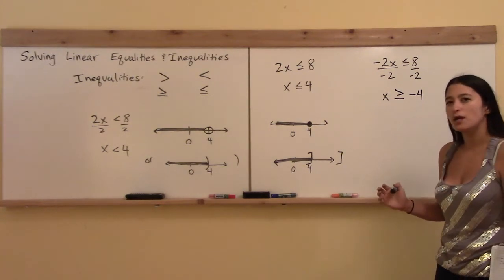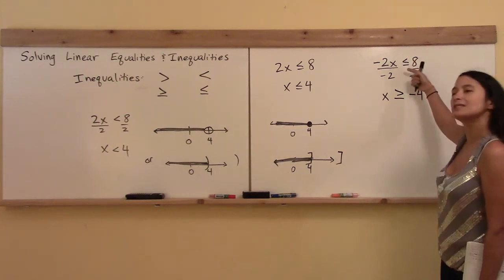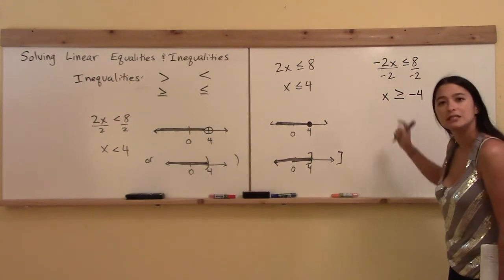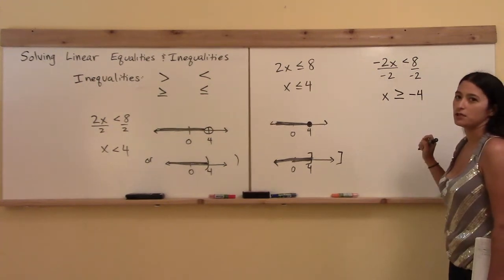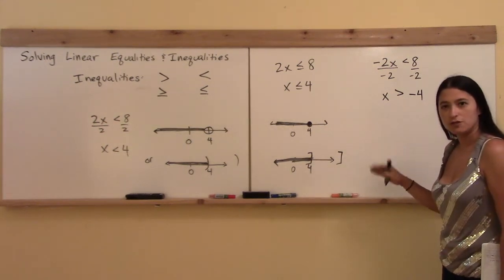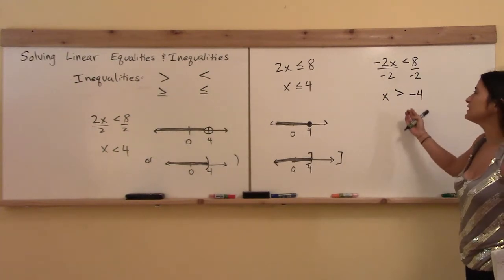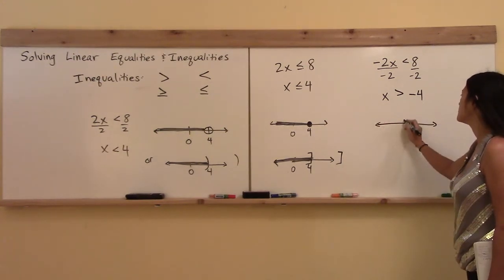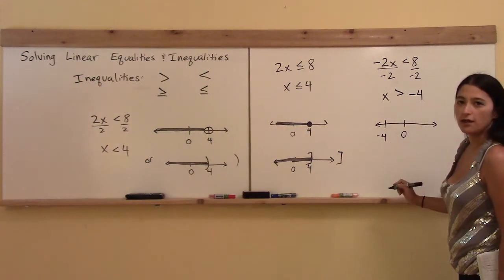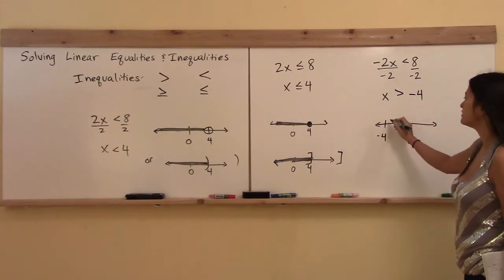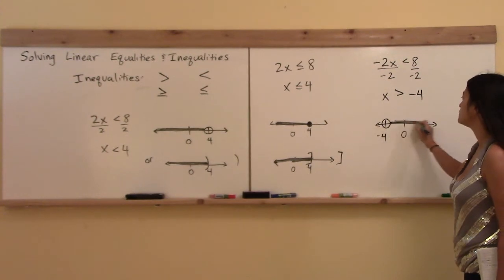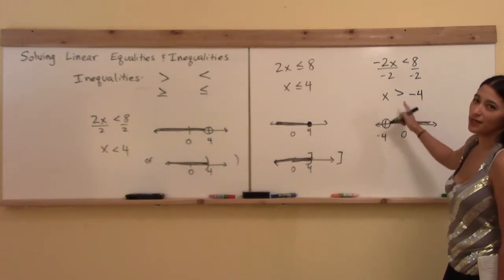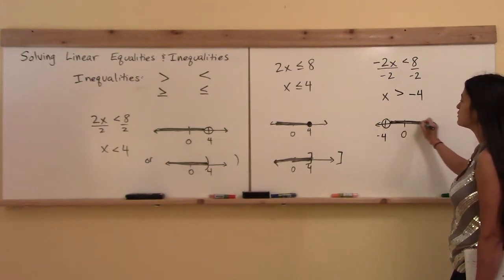When you flip the sign, you don't do anything to the equals part. Which is to say, if it was less than or equals, once you divide by a negative it becomes greater than or equals. If there was an equals, there stays an equals. If there was not an equals, then when you flip the sign there will not be an equals anymore. That sign flip doesn't change anything about the equals part — you just flip the direction. Here's 0 and here's negative 4 over here. The answer is x is greater than negative 4, so I'm shading in this direction instead.